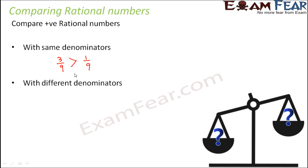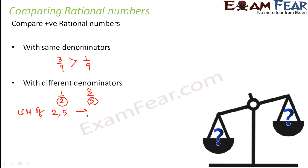What if we have different denominators? Let's say we have 1 by 2 and 3 by 5 — here the denominators are not the same, so it is difficult to tell which is smaller and which is bigger. What we do is convert both rational numbers into a form where they have the same denominator. To do that, we find the LCM of the denominators — LCM of 2 and 5. LCM stands for least common multiple, which we've learned in previous lessons.